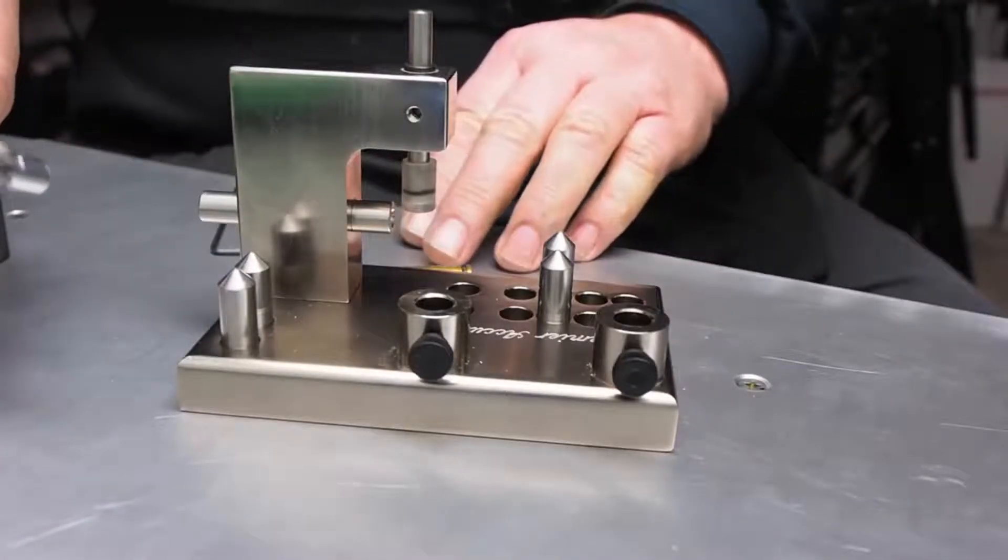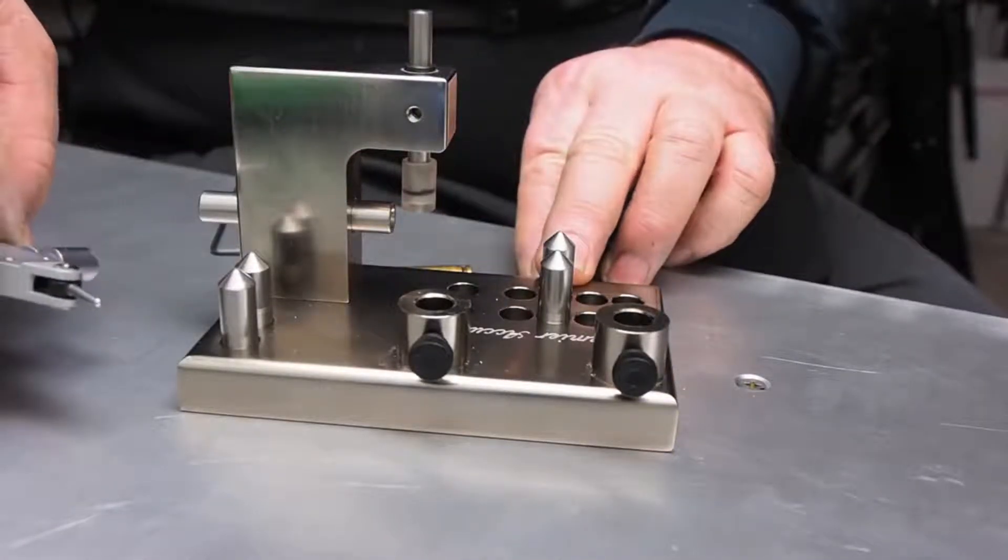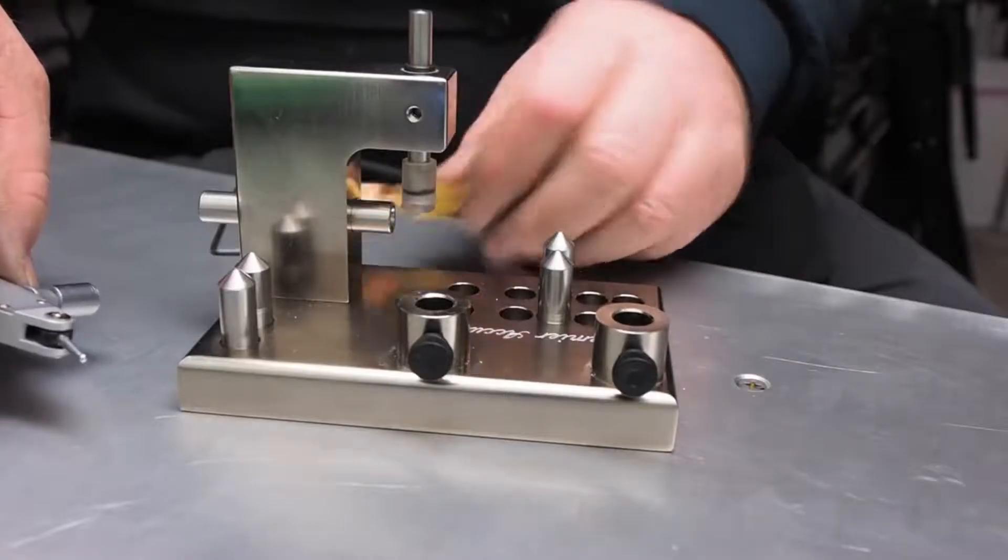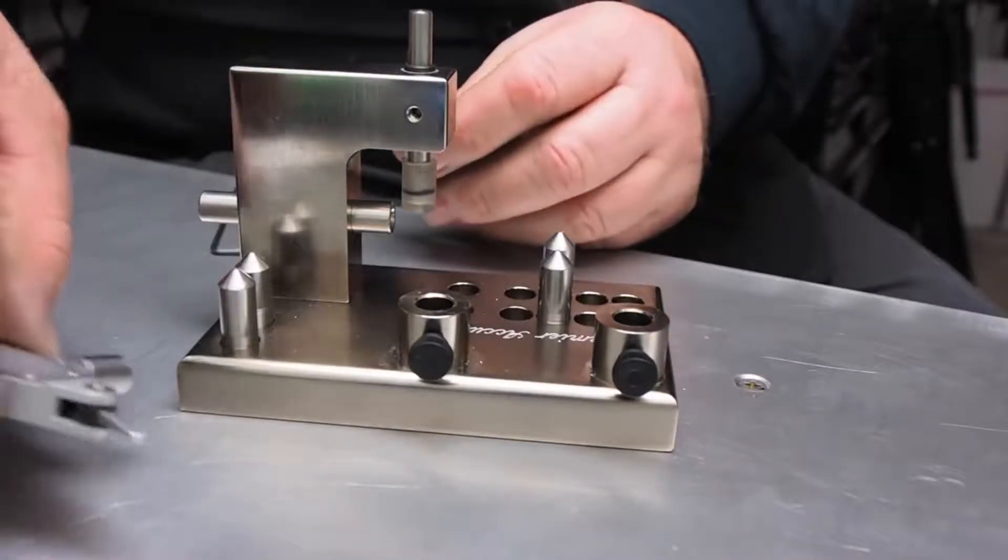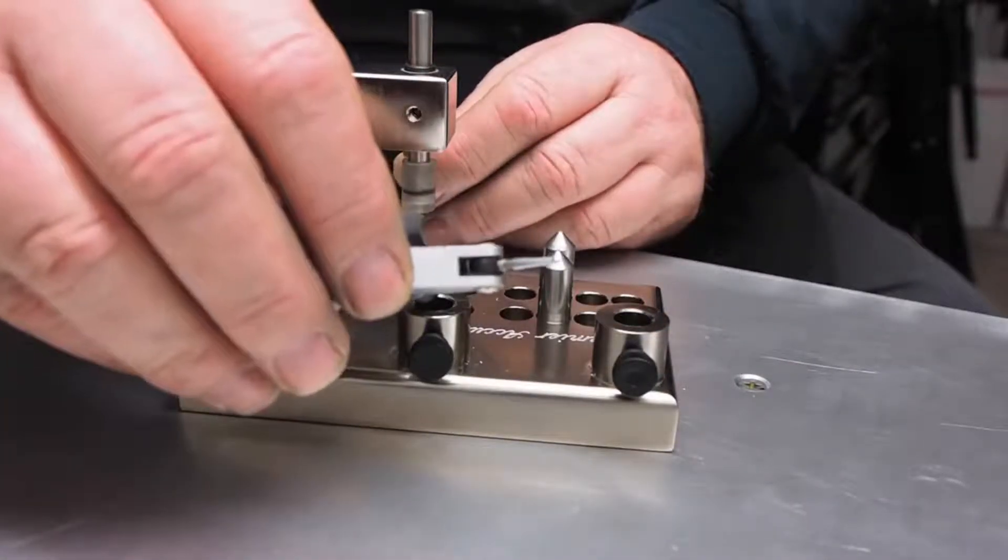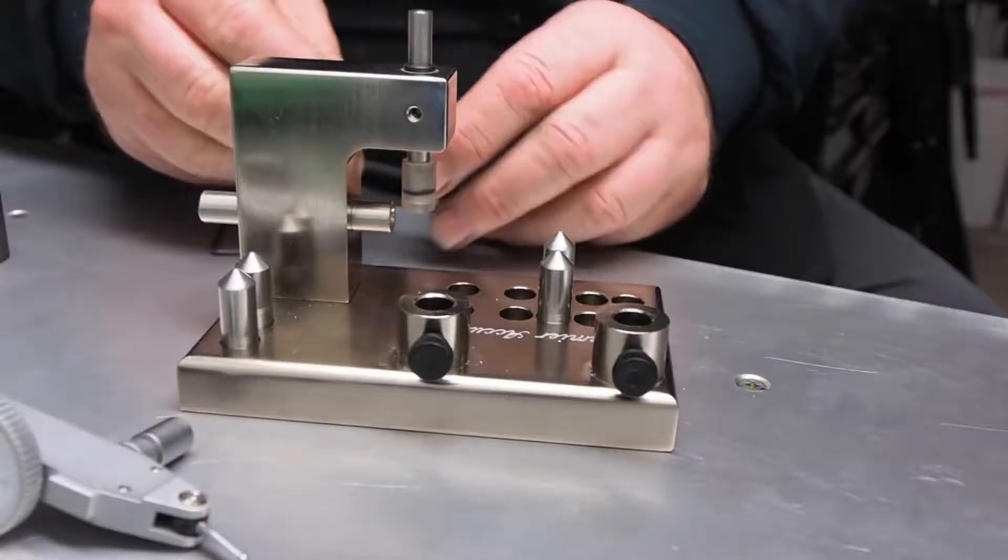Now we're going to show how simple it is to set this up for another caliber. I have a 6 PPC case sitting here. I'm going to take my indicator out of Station A and just lay it up out of the way so you can see this better.